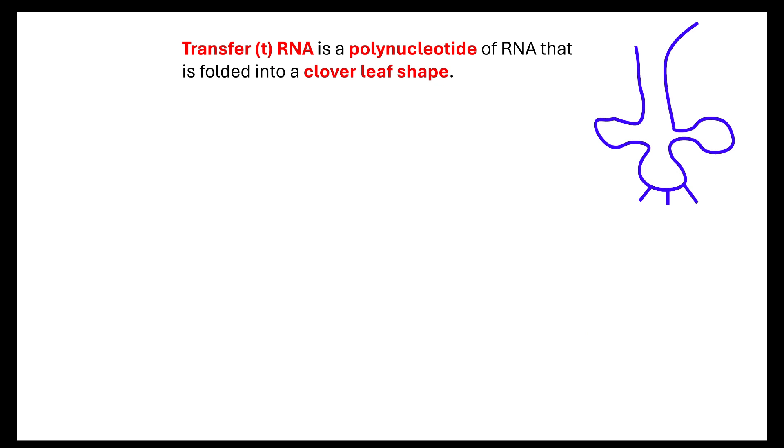So, the other molecule we need to talk about then is called the transfer RNA, or tRNA. So, this is another polynucleotide of RNA. It is folded into a clover leaf shape. So, it folds in a way because it can form hydrogen bonds. So, if there are bases which are complementary, as there are in the molecule, what happens is it folds itself into this clover leaf shape.